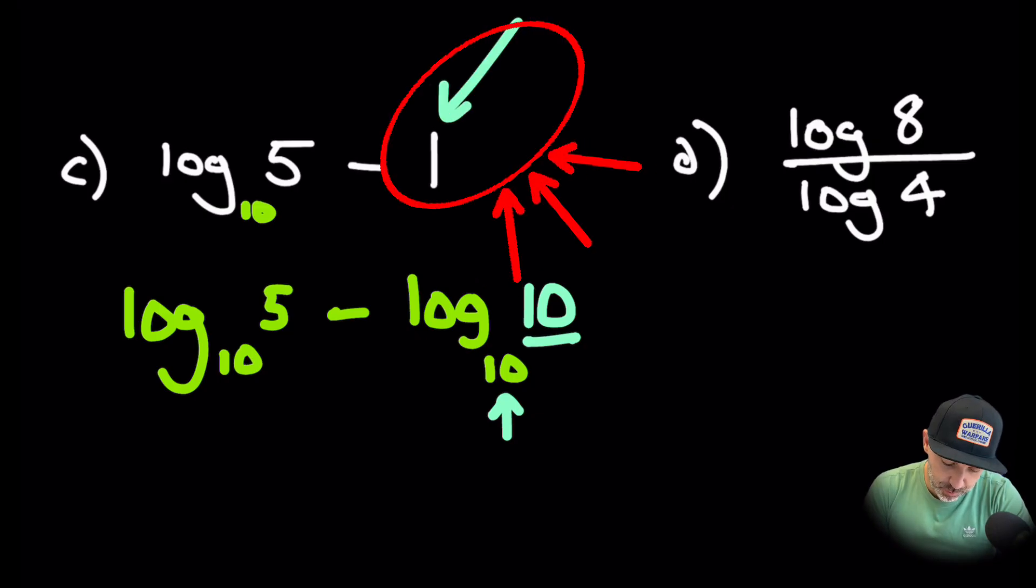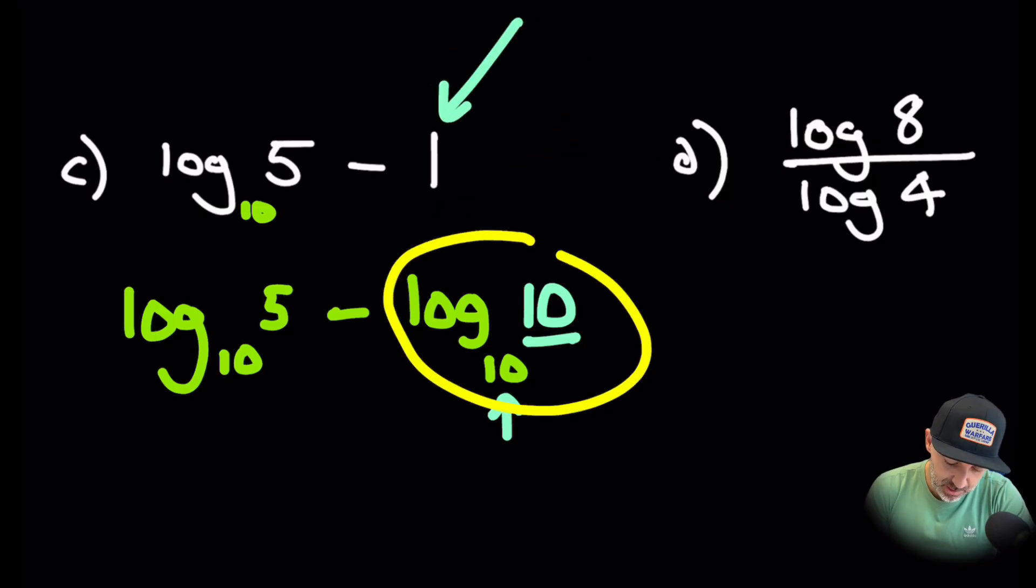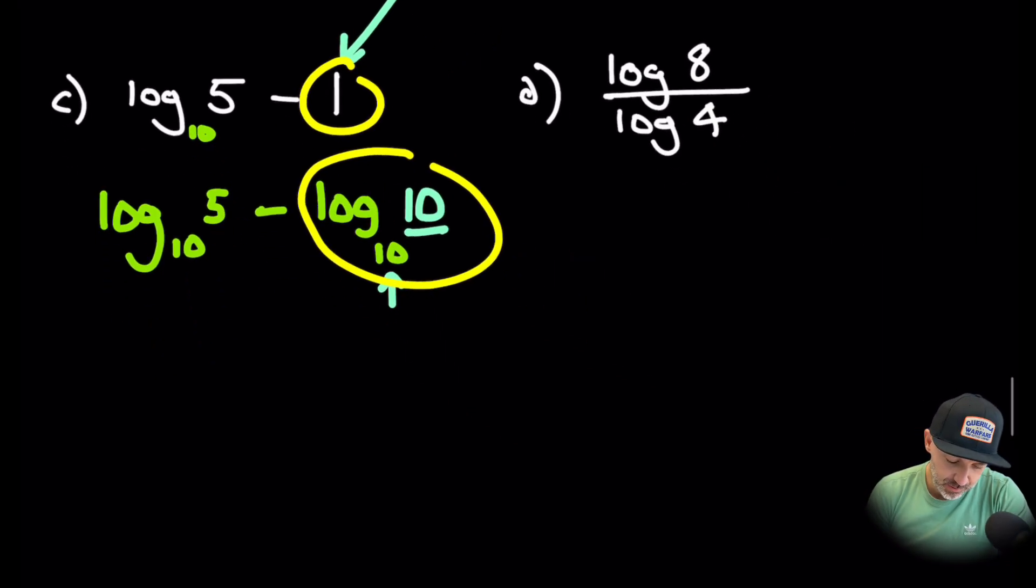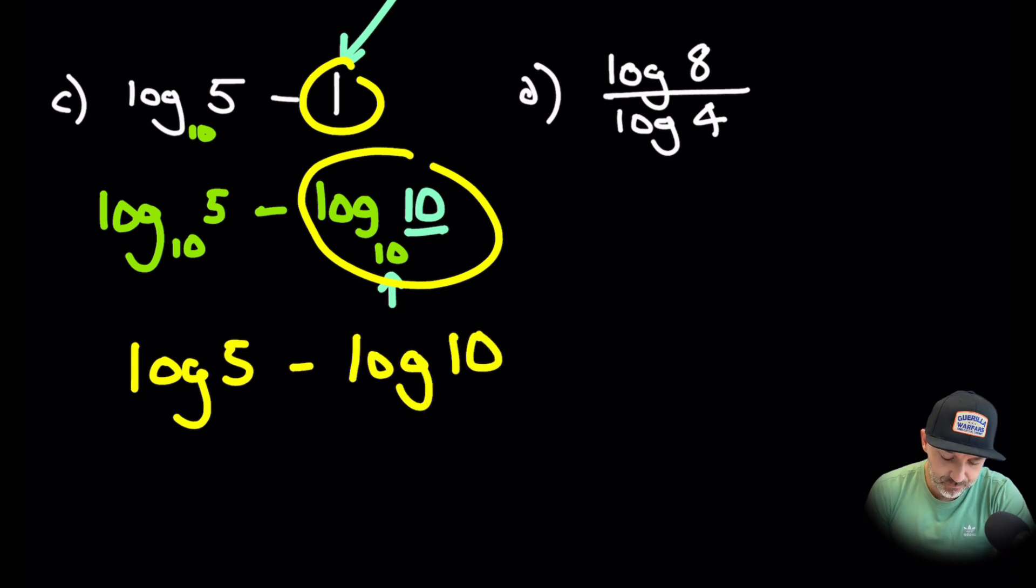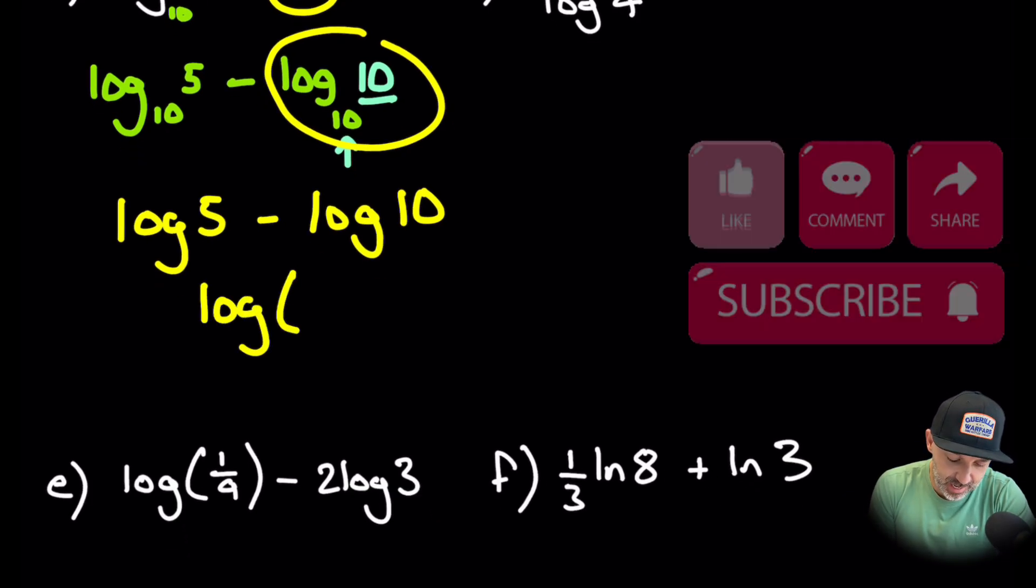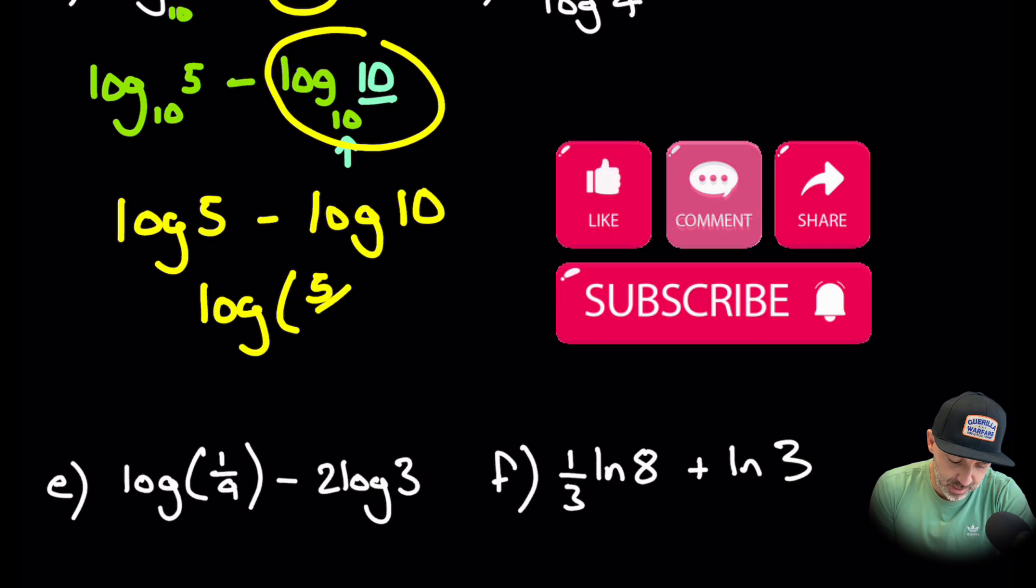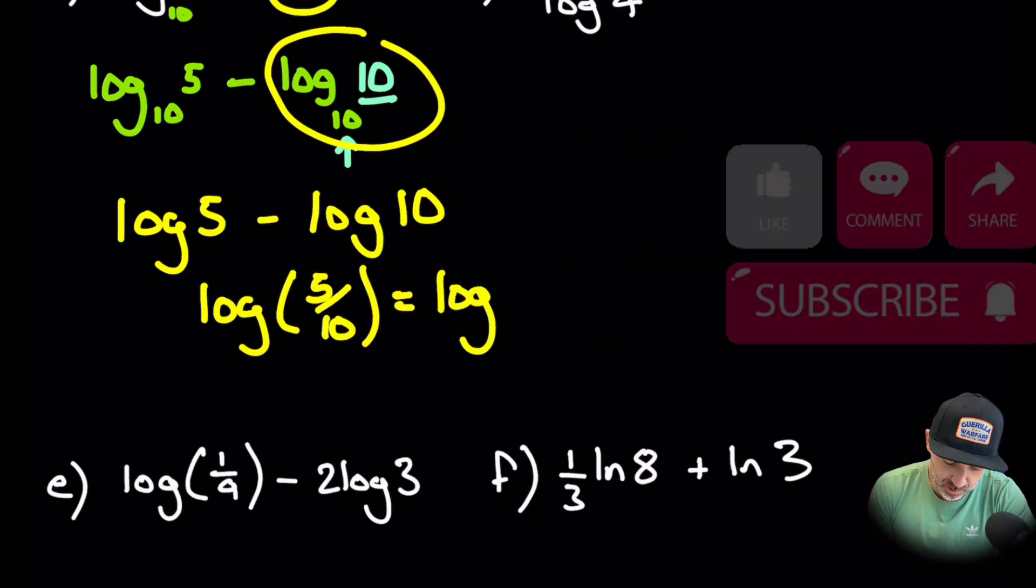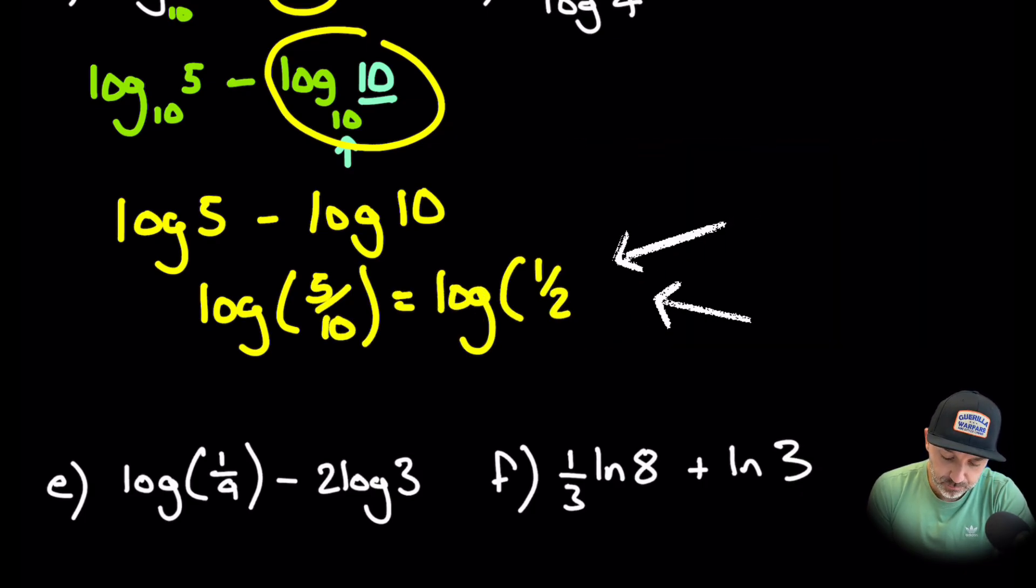Basically you are going to switch out this 1 with log 10. So therefore then you have log 5 subtract log 10, that is replacing the 1. So now we can combine those logs and we'll have log 5 over 10, which will be 5 over 10, which is equivalent to log of a half. So that was one when we have like a mixed value, a log and an integer.